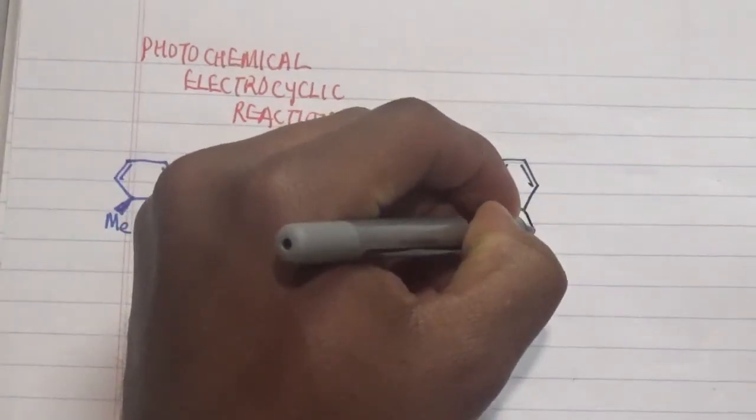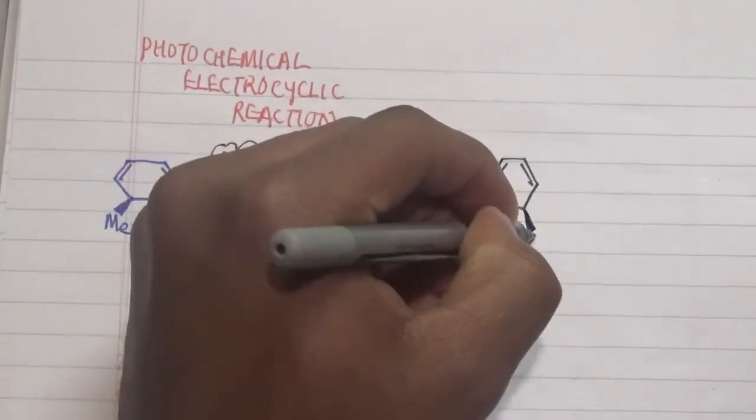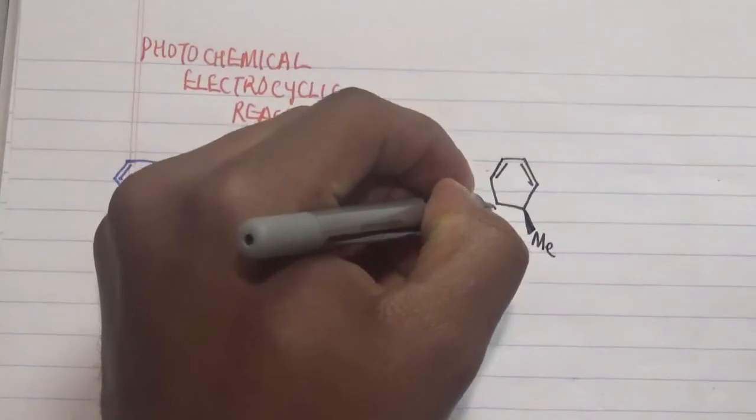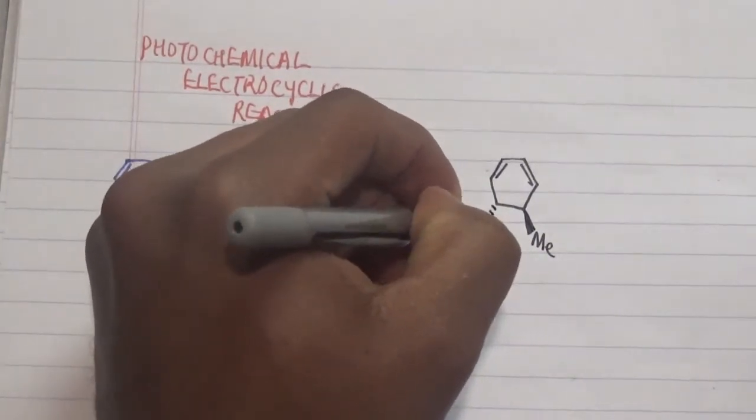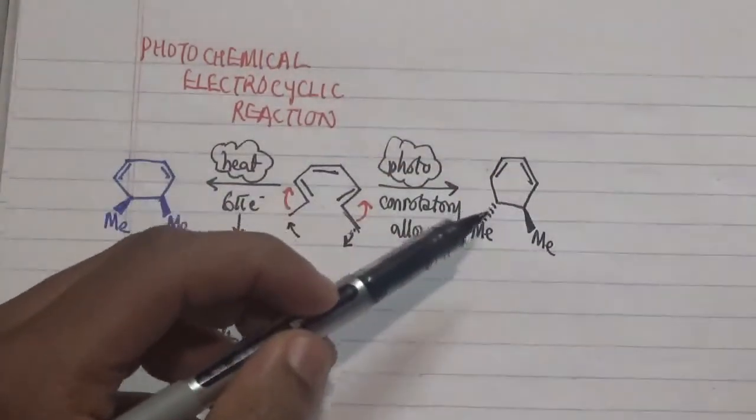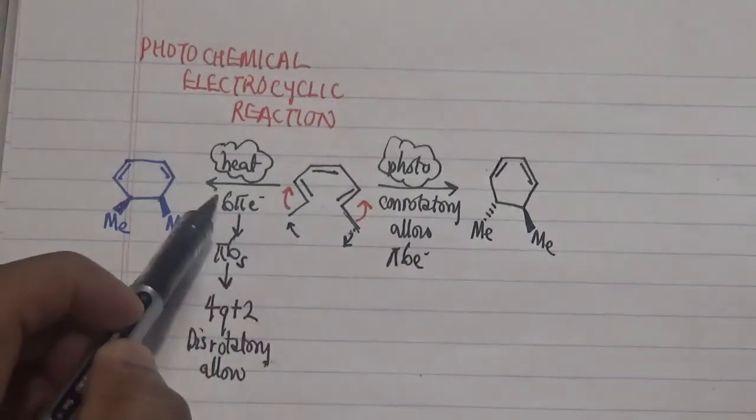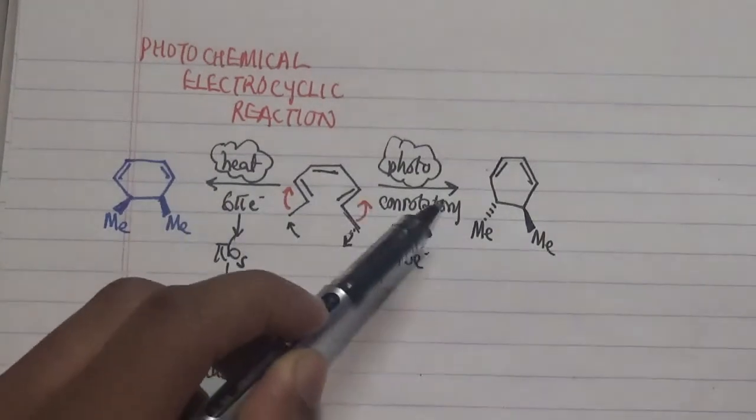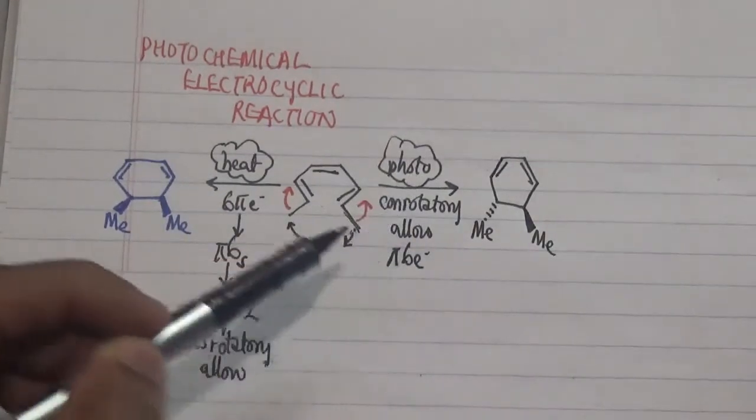Now let me draw our product, and what we notice in here is that we have that on one side we do have this, but on the other side of our terminal methyl we have the other case, so we have a trans positioning. That is how you are able to differentiate going in a thermal process versus going in a photochemical process.